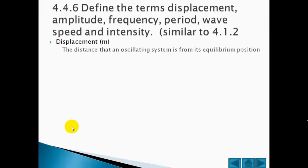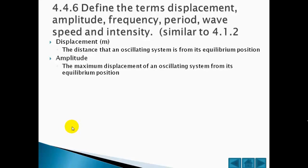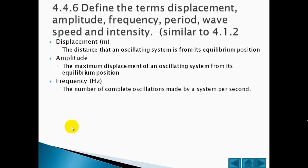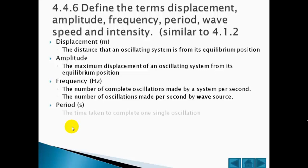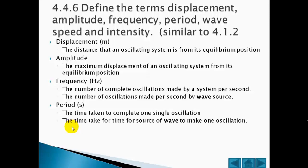We have to define the following terms. The displacement is the distance that an oscillating system is from its equilibrium position. The amplitude is the maximum displacement of an oscillating system from its equilibrium position. The frequency in Hertz is the number of complete oscillations made by a system per second, or the number of oscillations made per second by the wave source. The period in seconds is the time taken to complete one single oscillation, or the time taken for the source of the wave to make one oscillation.